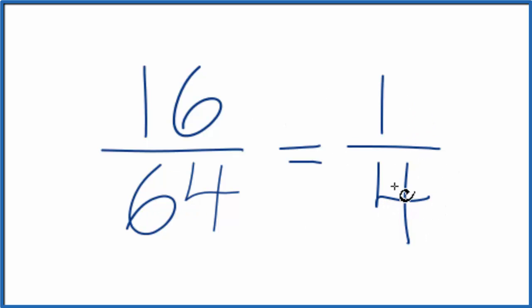If you don't know that, there's another way you could do this. You could just divide 16 and 64 by 2, since they're even numbers. 16 divided by 2 is 8, and then 64 divided by 2, that's 32.